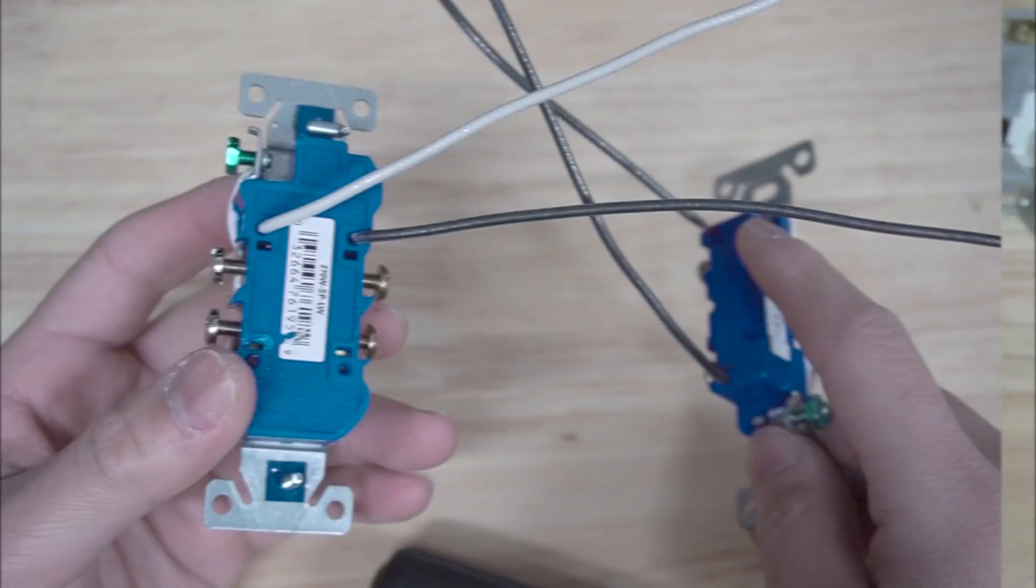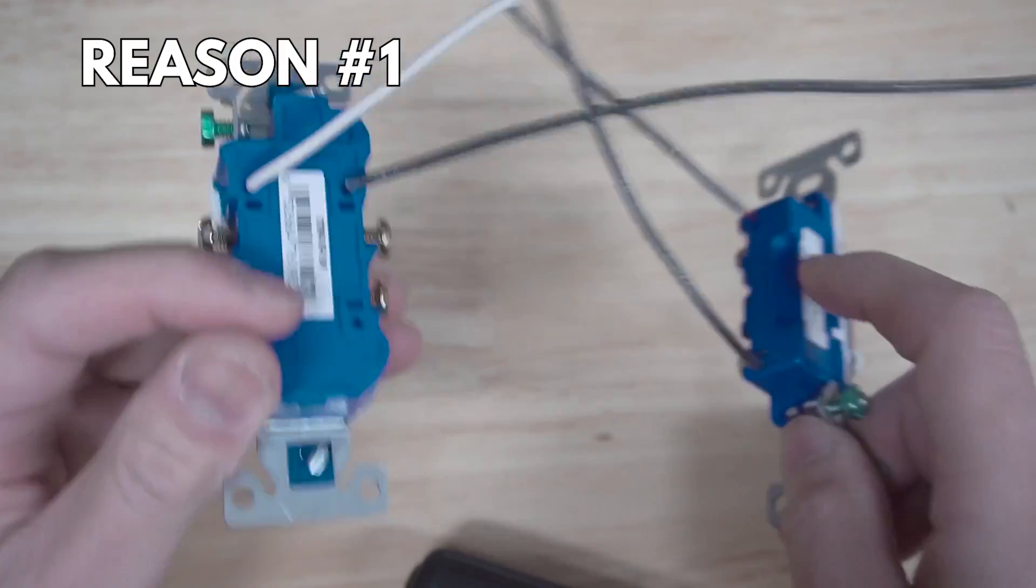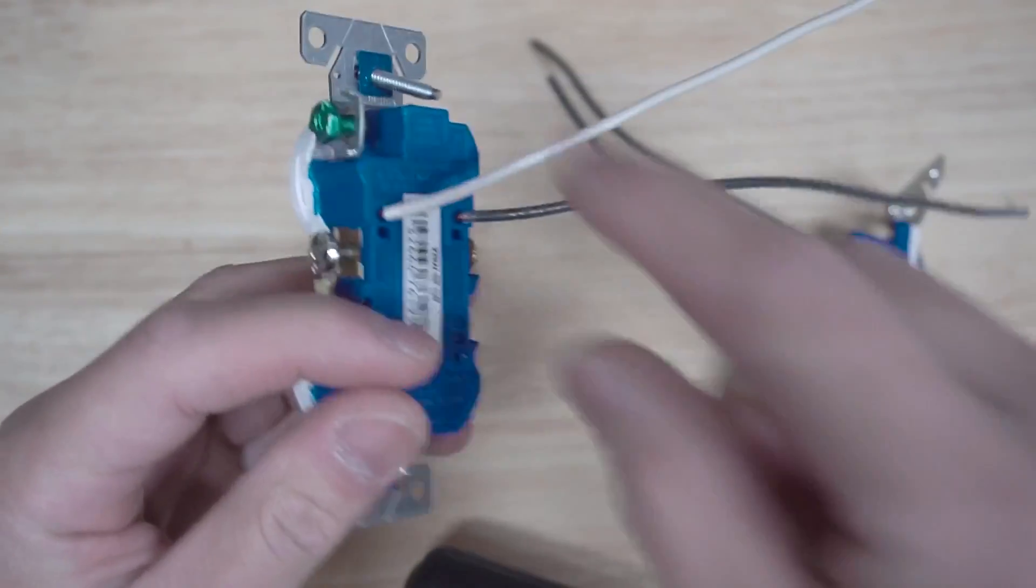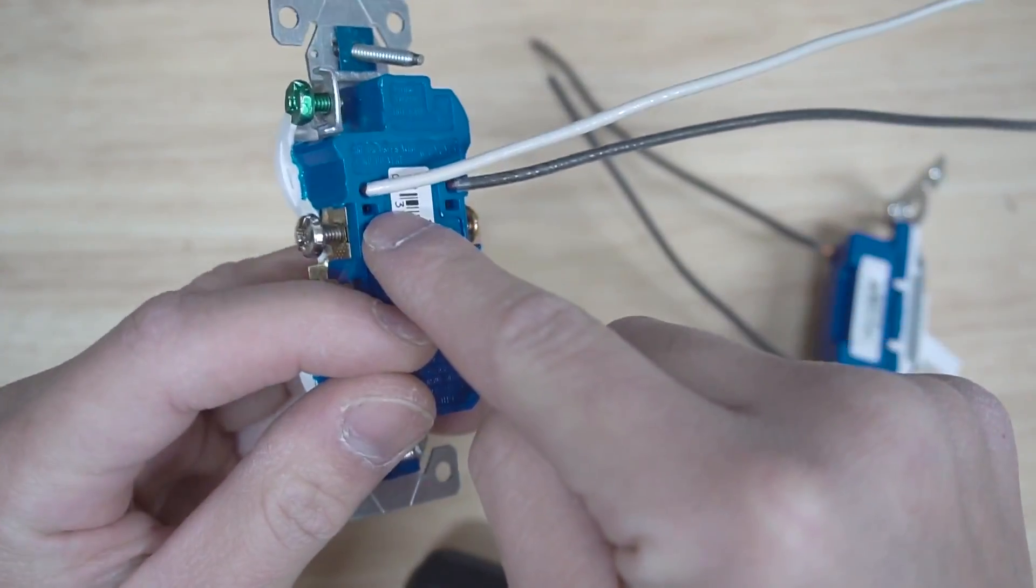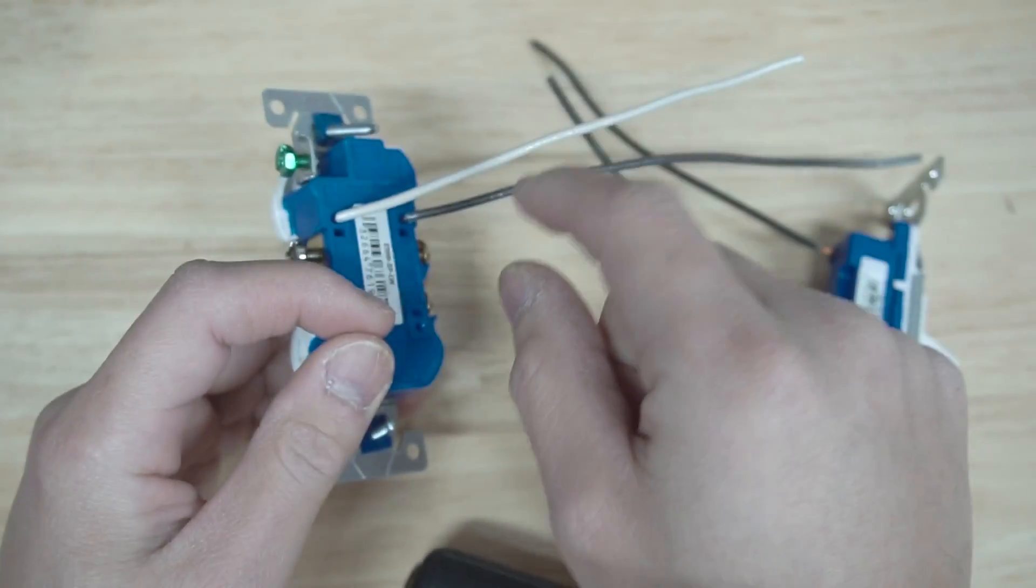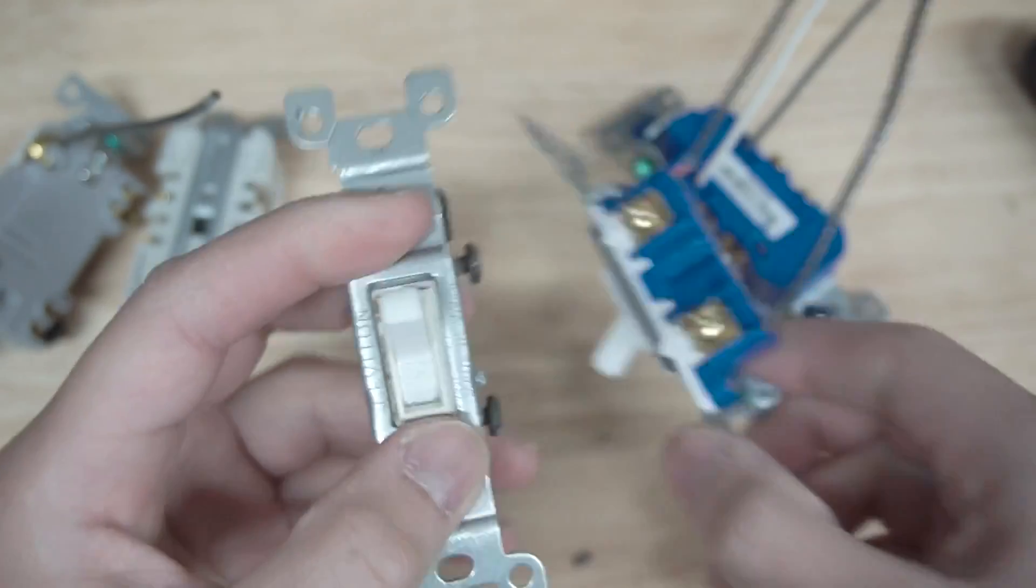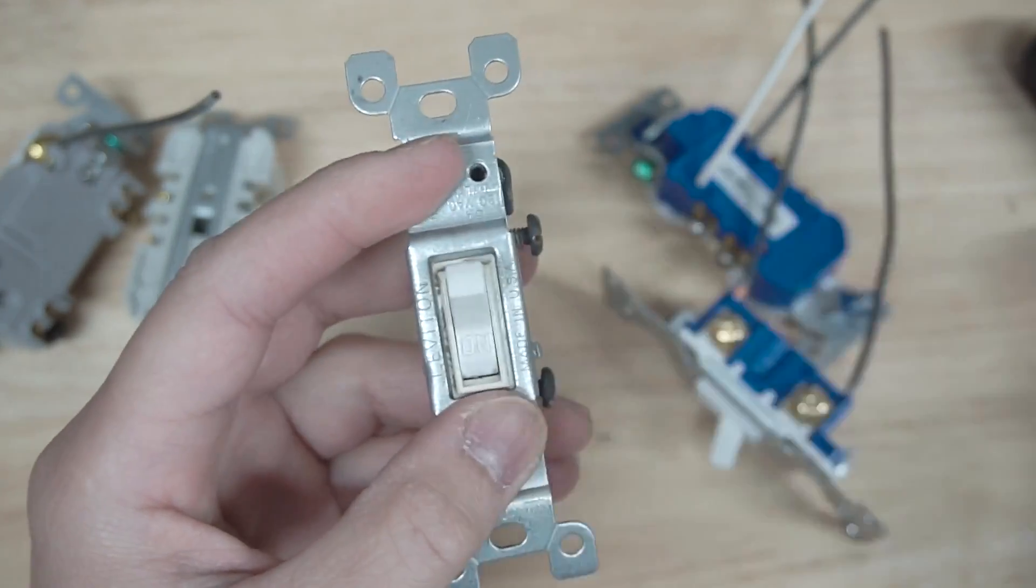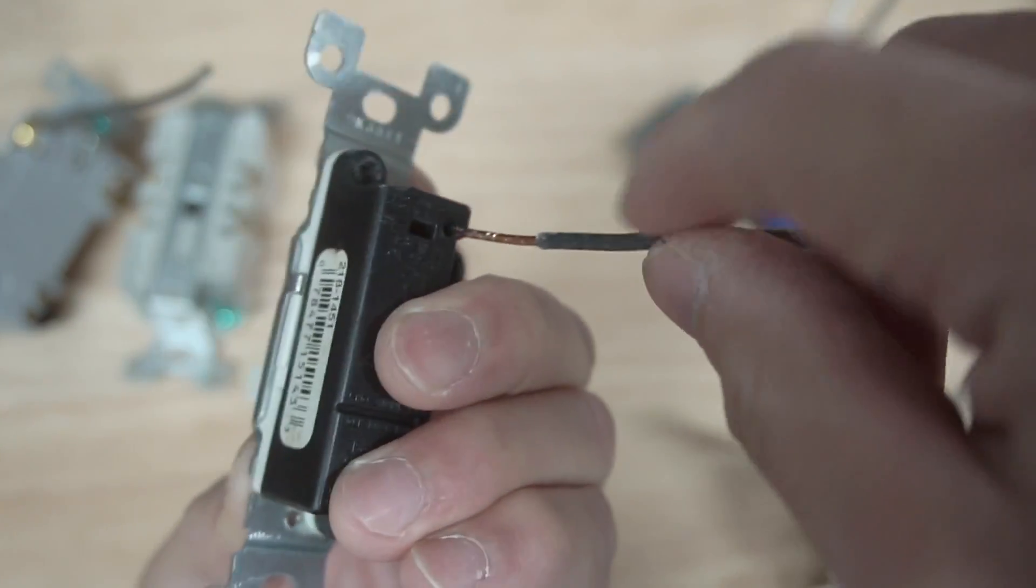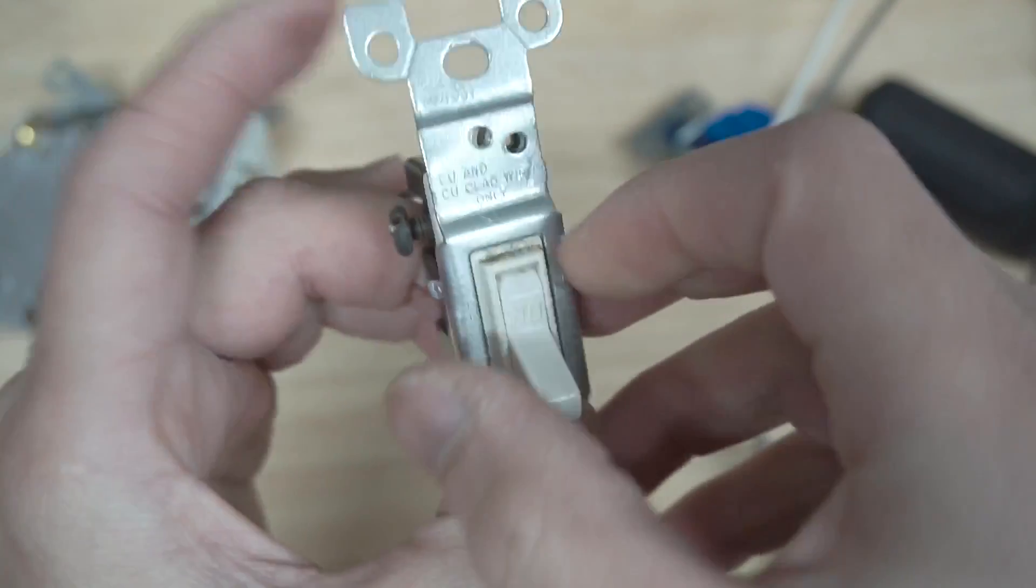Reason number one why you shouldn't backstab, back wire, or use these push-in terminals is because there are less contact points when you do this method. If you push this into the push-in terminal, I will show you later on why there's a little bit of contact from the terminal with the wire. Let's push this in on this speed wire terminal, and if you open it up...